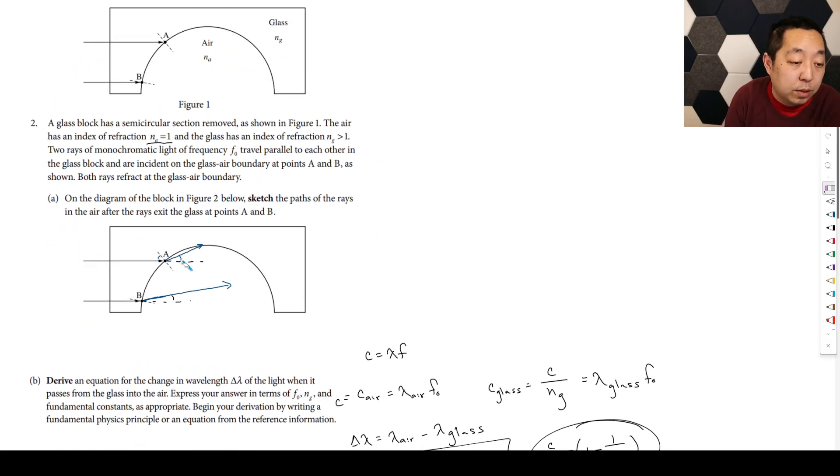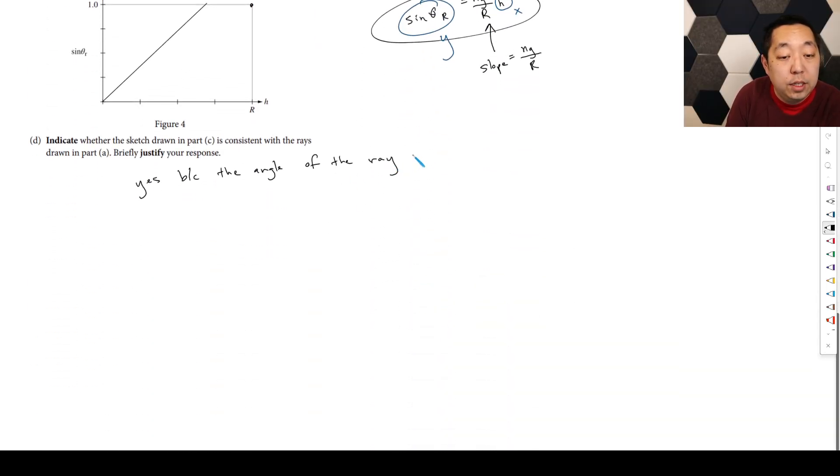So yes, because the refracted angle is greater. This angle here is greater than this angle here. So the refracted angle in the refracted ray in A is greater than the angle for B. And A is at a larger height, at a higher point. Just connect the idea that it's at a higher point and so the angle is larger. And so that's all you have to show.